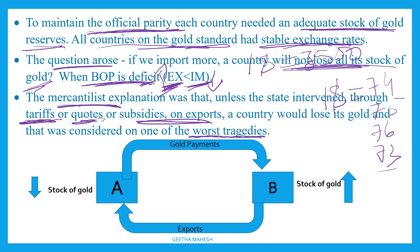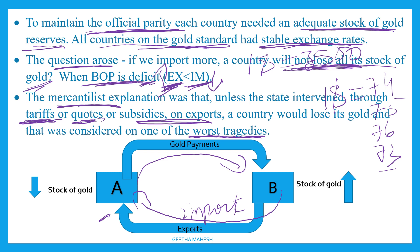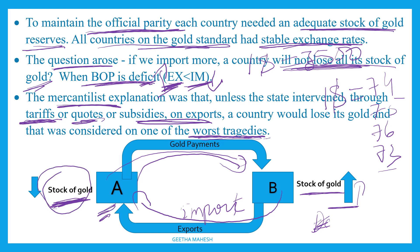Let's look at this chart. A country will export, so B country will import. A country receives gold payment, and the stock of gold is stored in A country. Under mercantilism, this is the worst tragedy for a country like B, because it is losing all its gold.